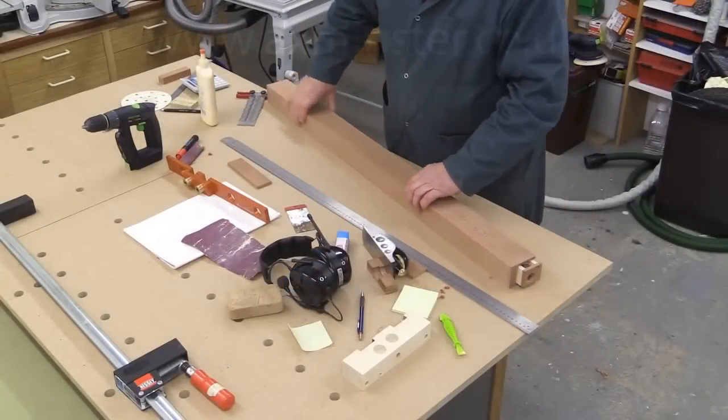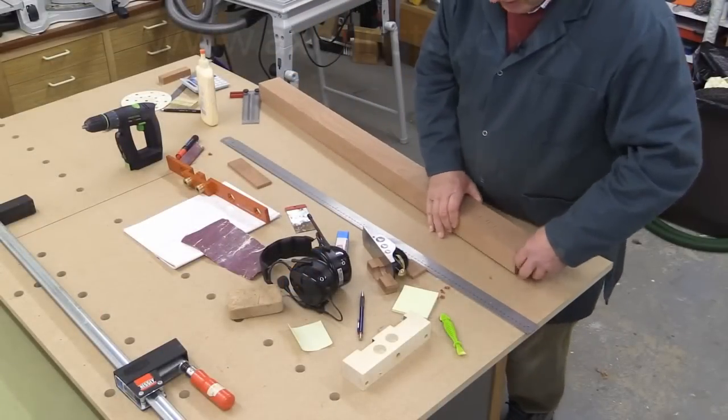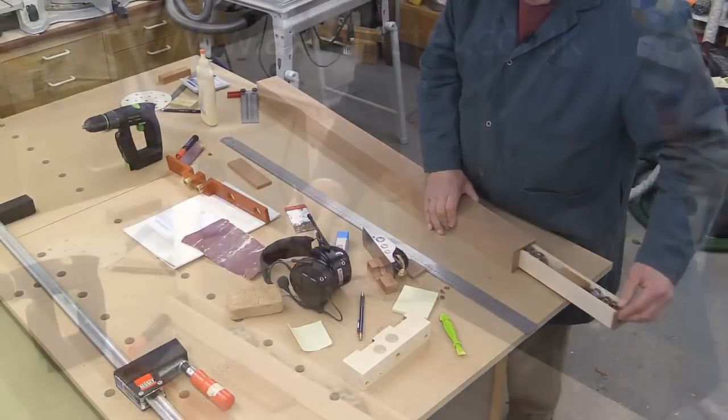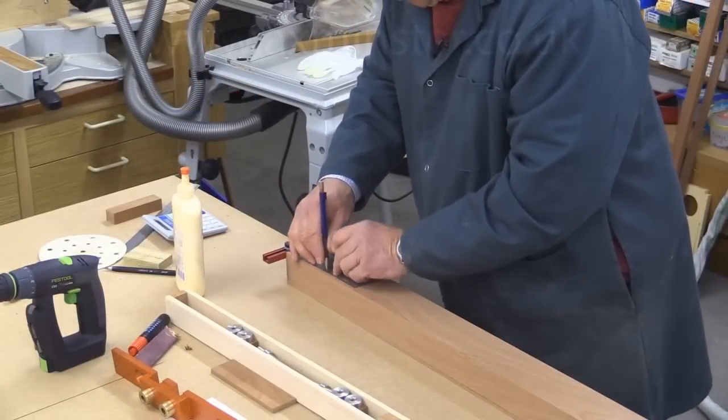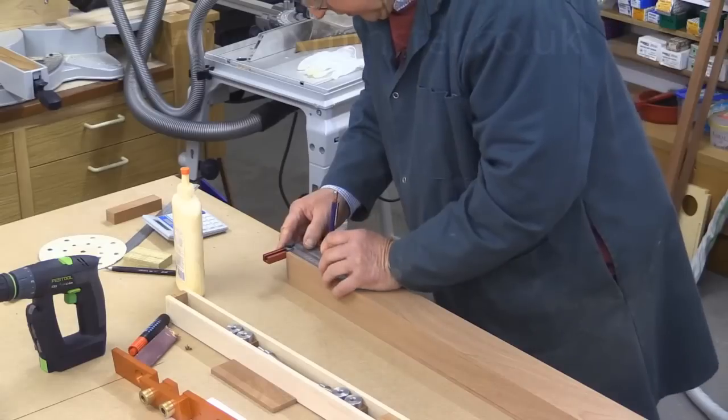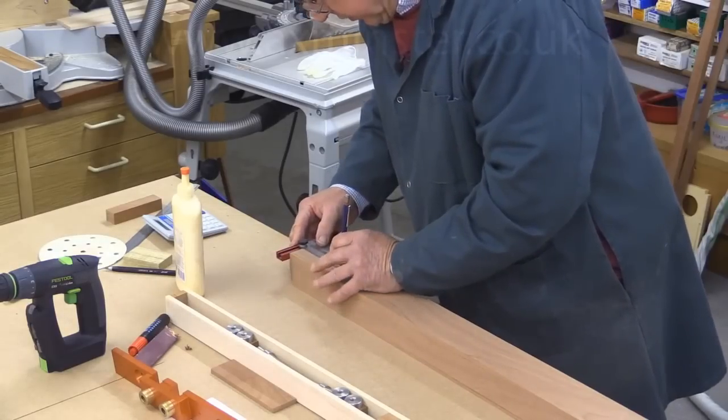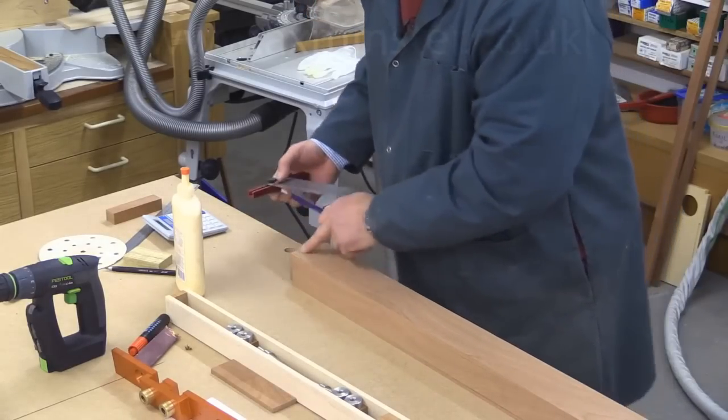Right, there it is. The top's glued on. This drawer needs a little bit of easing. It's just a little bit tight. And I'm just now marking for that cut I've got to do at 102 millimetres from this end.